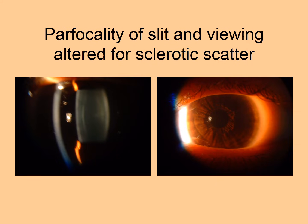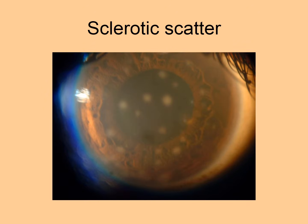These pictures illustrate that for an optical cross section of the eye you need parfocality — the slit and the observation must be focused at the same point. For sclerotic scatter, the slit is on the left side of the picture while the focus of the observation system is in the middle of the cornea. Here are superficial punctate keratitis patches seen in sclerotic scatter.